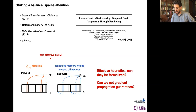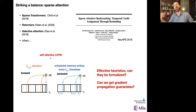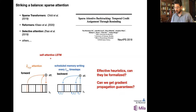So far, most of these attempts, including SAB, proposed heuristics and showed that they work, but there's no real guarantee on gradient propagation in these types of settings. This is what we're proposing to change. What I'd like to present today are novel results in trying to understand and formalize the ways that gradients propagate in the presence of both recurrence and attention. You can find more details in the paper that's on the archive.